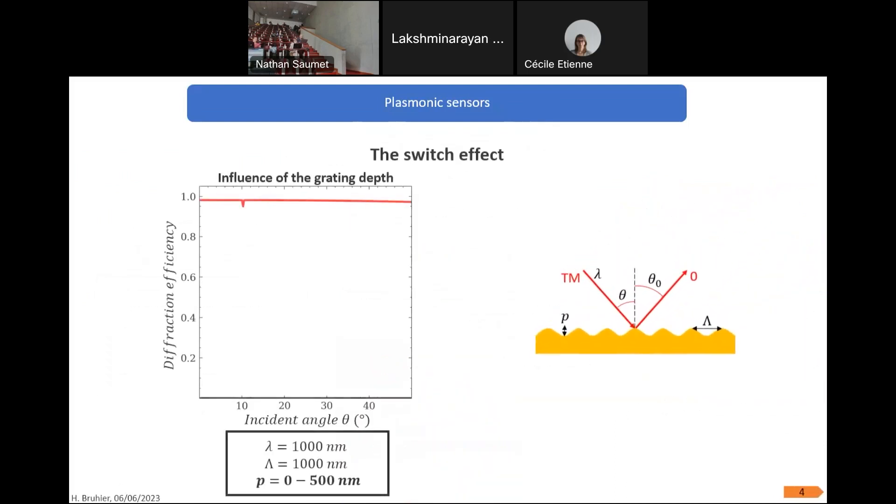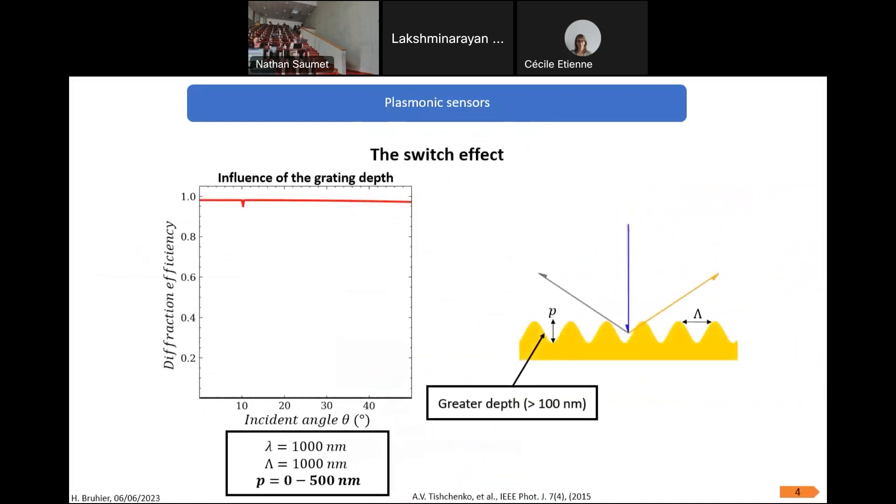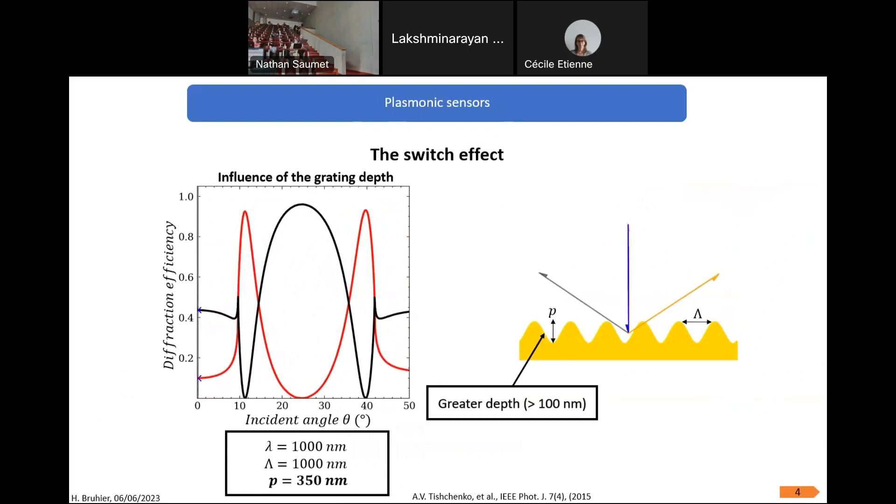However, we can also work with higher depth on our grating. By working with greater depth up to 100 nanometers, we can then work no longer only on one order, the zero order, but also with the minus one. By working with both orders and with the good matching parameter with the wavelength and the period, we can have this graph, which is the switch effect.